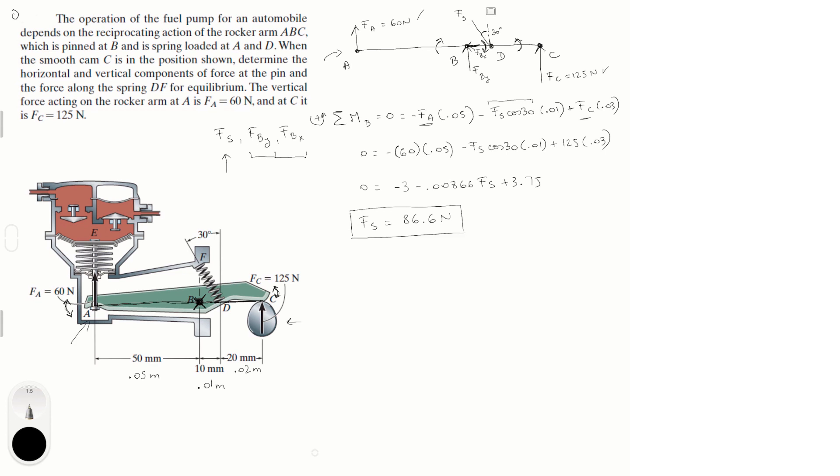Now we can find the other two by doing sum of the forces on X is equal to 0, and it's super easy guys. If you look at the diagram, it's minus F_B_X plus the horizontal component of F_S which is F_S sine of 30.